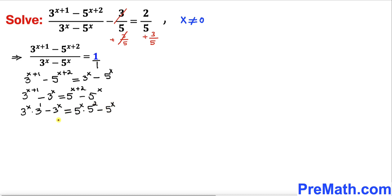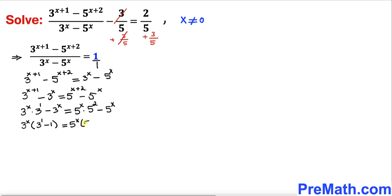We can see that 3^x is common on the left hand side, and 5^x is common on the right hand side. So on the left hand side we factor out 3^x to get 3^x(3^1 - 1), and on the right hand side we factor out 5^x to get 5^x(5^2 - 1).